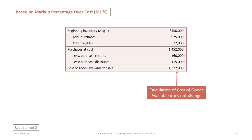The approach to resolving this is very similar at the beginning to the gross profit percentage approach. We begin with our opening inventory of $450,000. We add in purchases of $975,000 and freight of $27,000 to give us purchases at cost of $1,452,000. We then deduct purchase returns of $60,000 and purchase discounts of $15,000, giving us cost of goods available for sale of $1,377,000. The calculation of cost of goods does not change from the gross profit percentage approach.